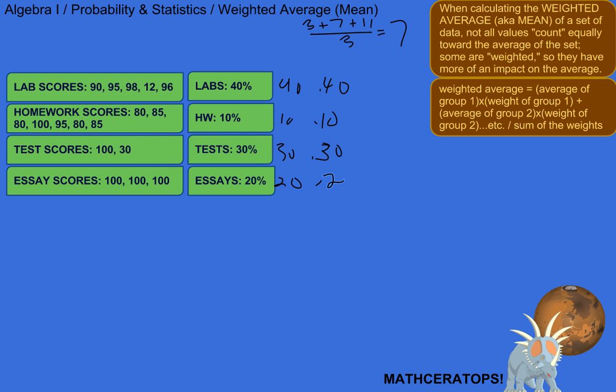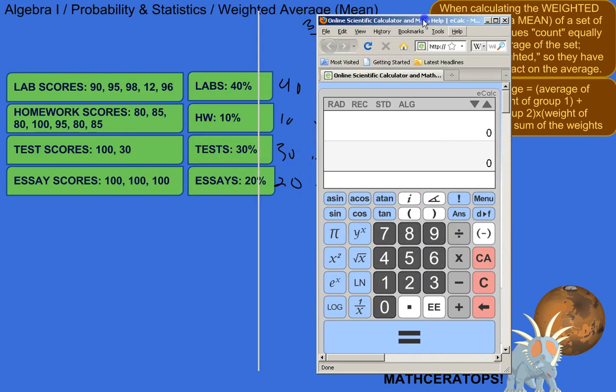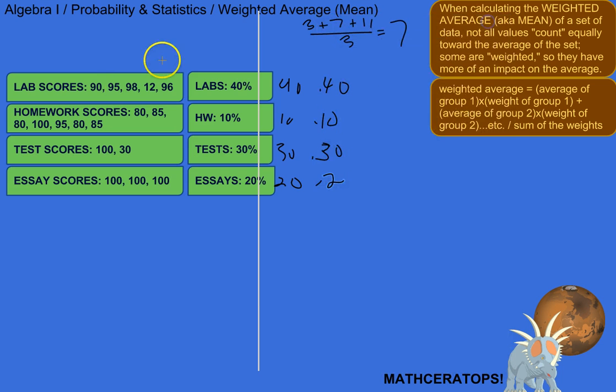So I'm going to bust out the calculator for these, because this is going to take me three years if I do it all by hand. So we have 90, plus 95, plus 98, plus 12, plus 96, is that all of them? So that's 1, 2, 3, 4, 5, so we divide that by 5. So 78.2 would be the unweighted average of the lab scores.